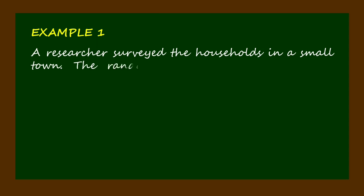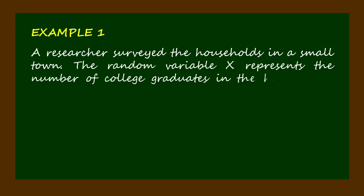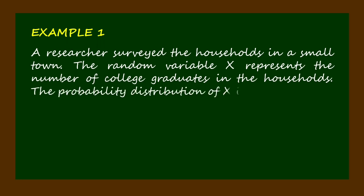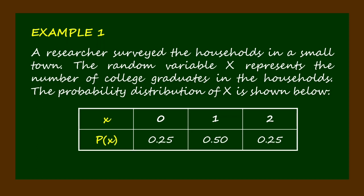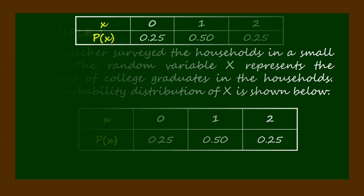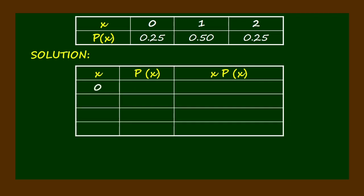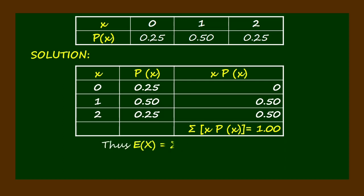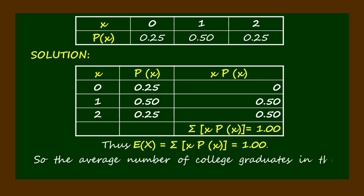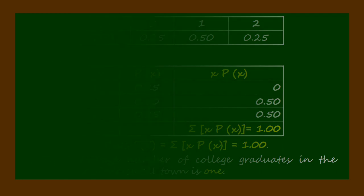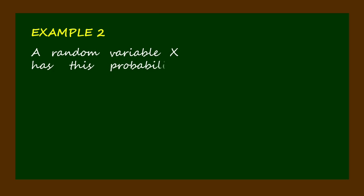Example one: A researcher surveyed the households in a small town. The random variable x represents the number of college graduates in the households. The probability distribution of x is shown below. To show the solution, we construct a table showing x multiplied by P(x), then take the sum of the resulting products. The sum is equal to 1.00, which is the mean or expected value. So the average number of college graduates in the households in a small town is one.